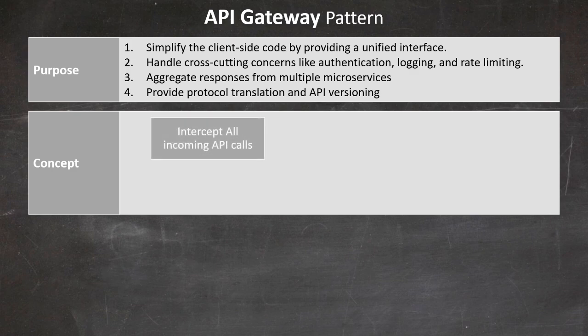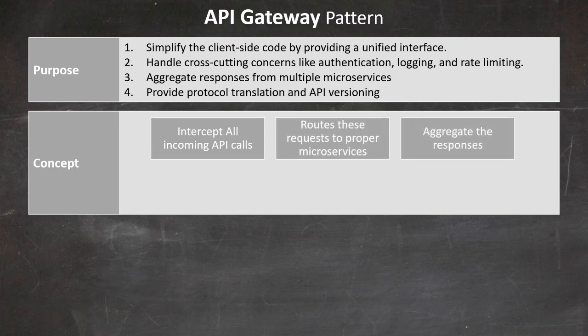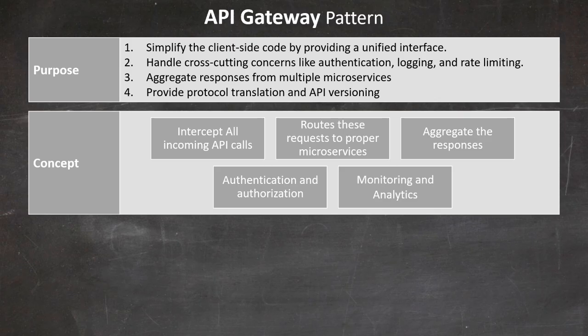The API Gateway acts as a reverse proxy, intercepting all incoming API calls from clients. It then routes these requests to appropriate microservices, aggregates the responses, and returns them to the client. The Gateway can also perform additional functions such as authentication and authorization, request and response transformation, caching, monitoring and analytics, and rate limiting and throttling.